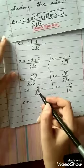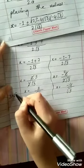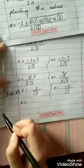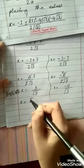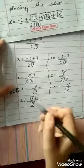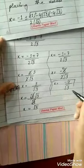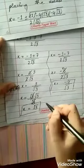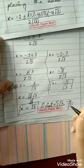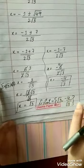Now, how to simplify further: since 3 = √3 × √3, we can write 3/√3 as √3×√3/√3 = √3. So x = √3. And x = −4/√3 remains as is. So the solution set is {√3, −4/√3}. This is question number 1, part 3.